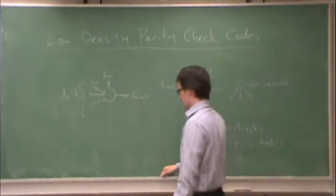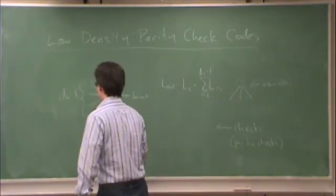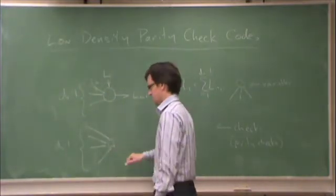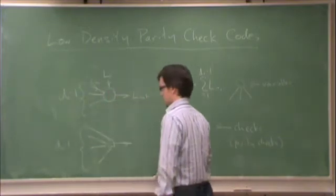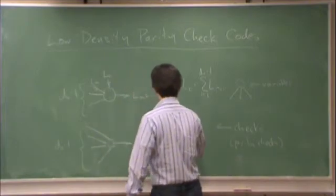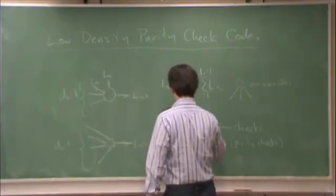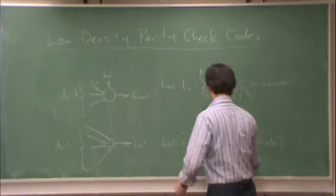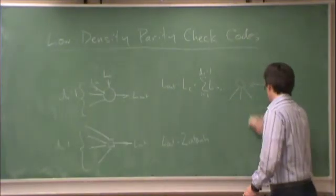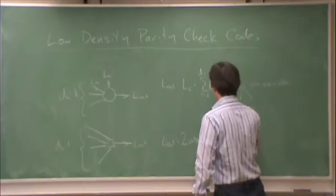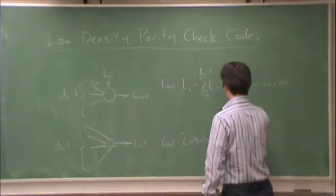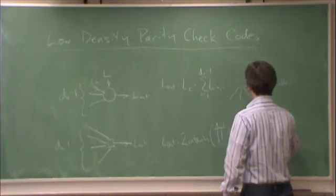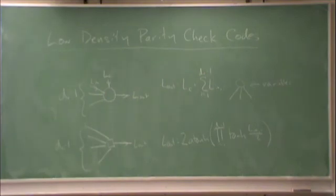At a check, we have dc minus one input messages from the graph. There's no equivalent to the channel message down here. And the output L out is equal to this expression: twice arctanh of the product from i equals one to dc minus one of tanh of L in i over two.